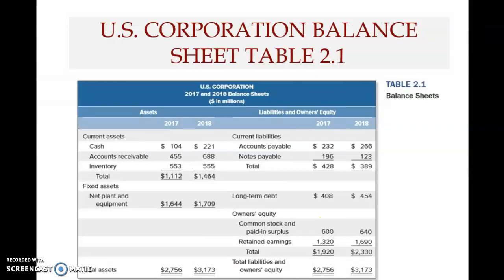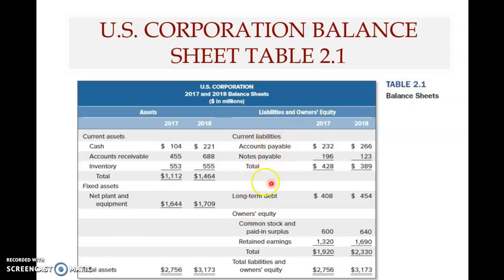Welcome back. In the third part of chapter two, we are going to look at the remainder of the items available in the balance sheet. We have looked at assets in the previous segment. Now we are going to look at liabilities and owners equity. The format is that liabilities are ordered from the most liquid liability to the least liquid liability. We start with the most liquid, which is accounts payable, because it will be paid within one year.